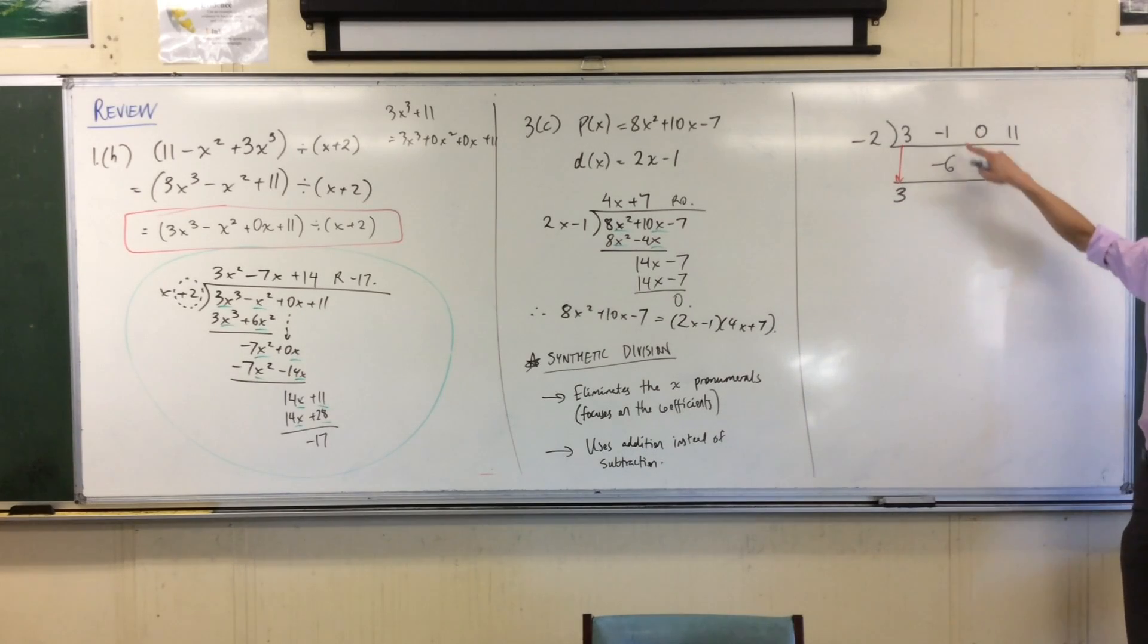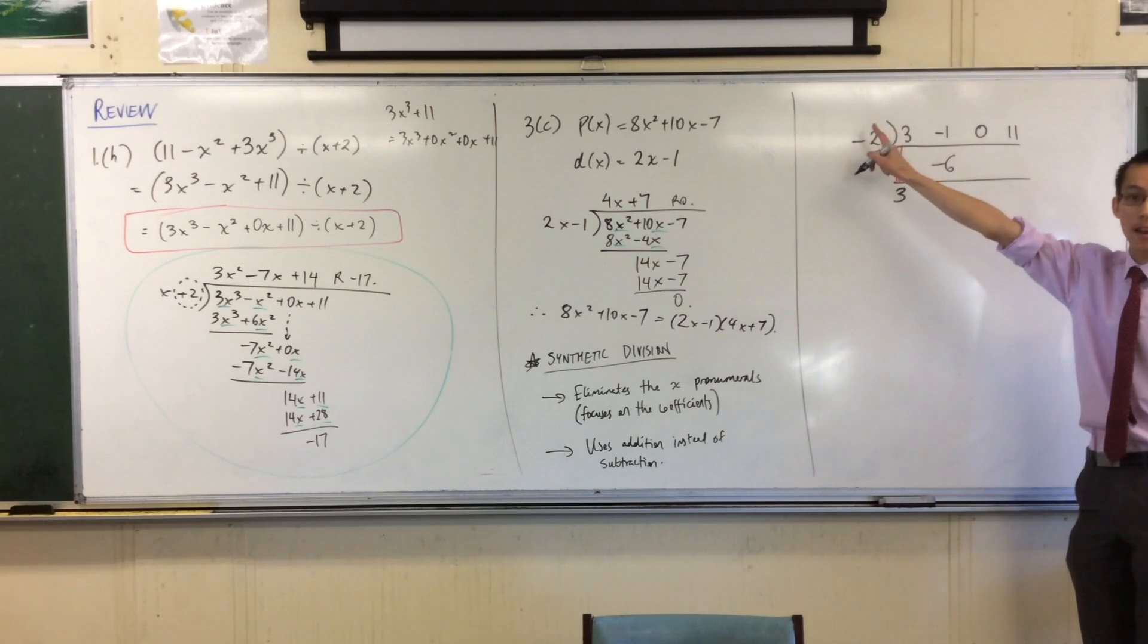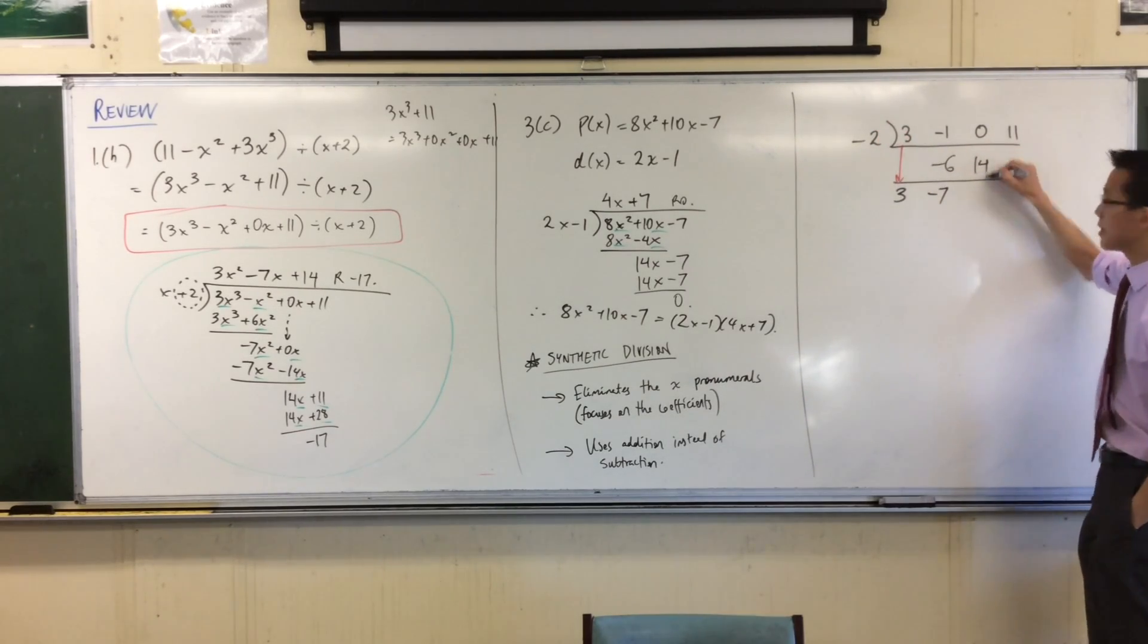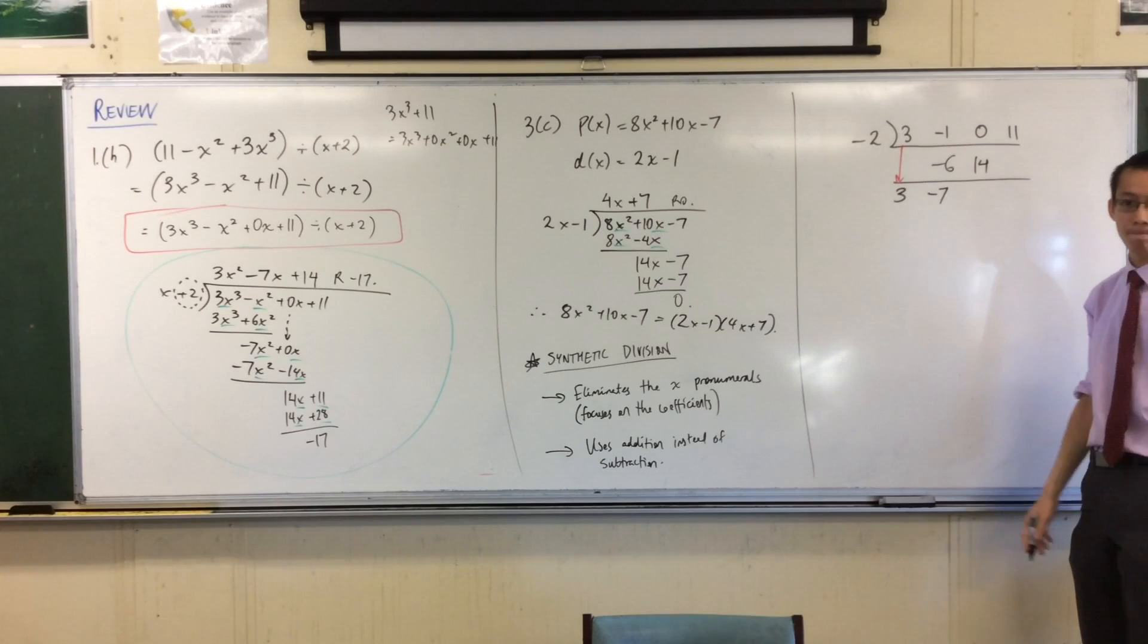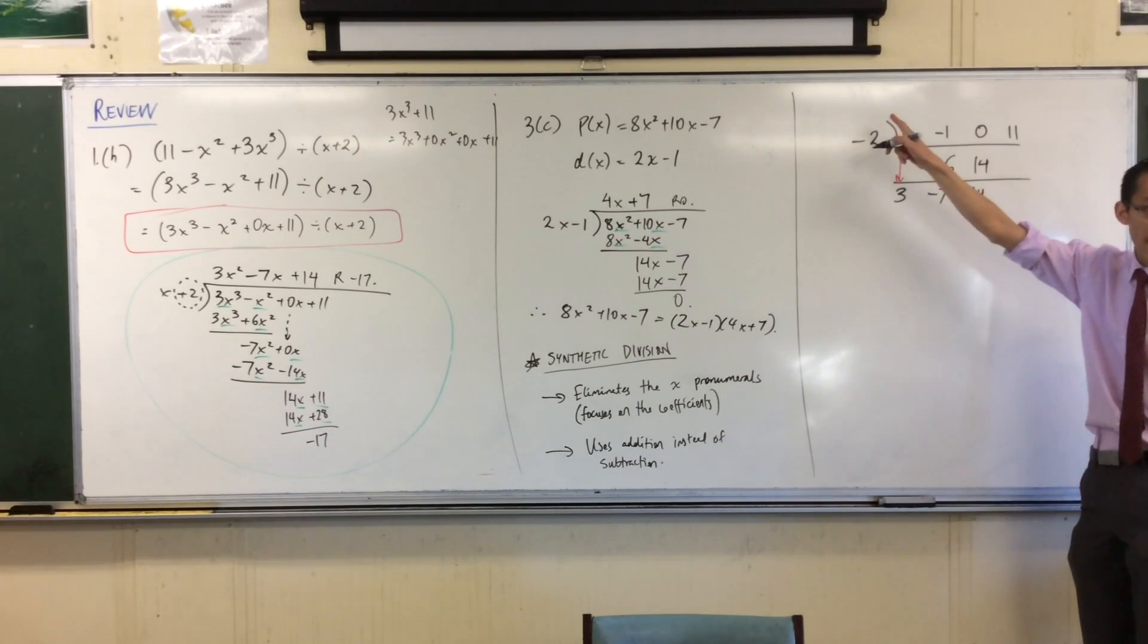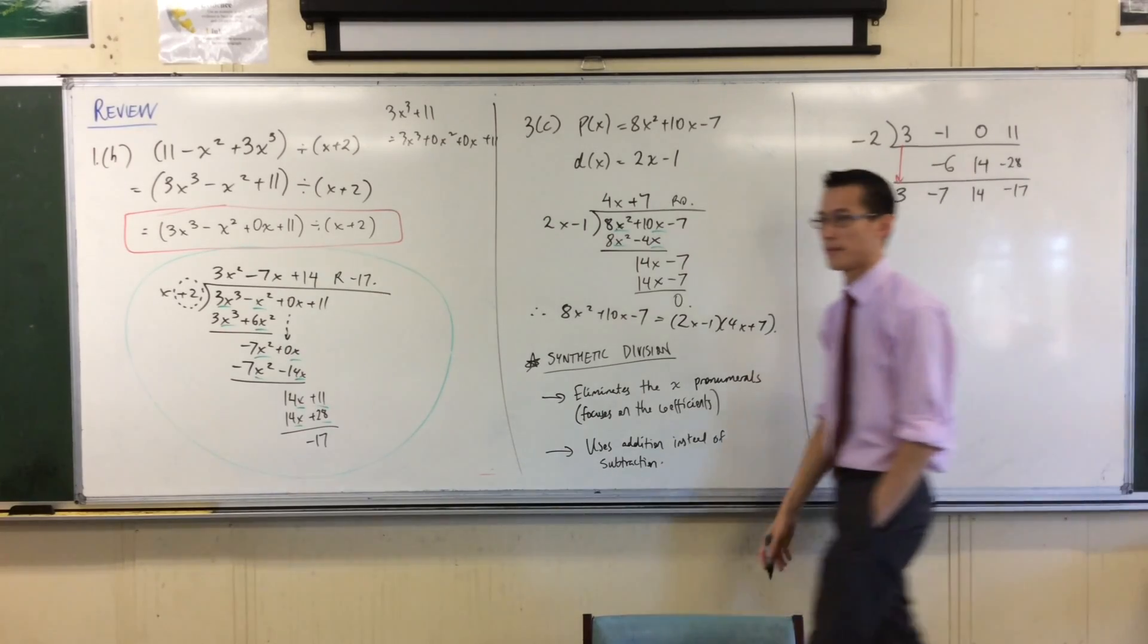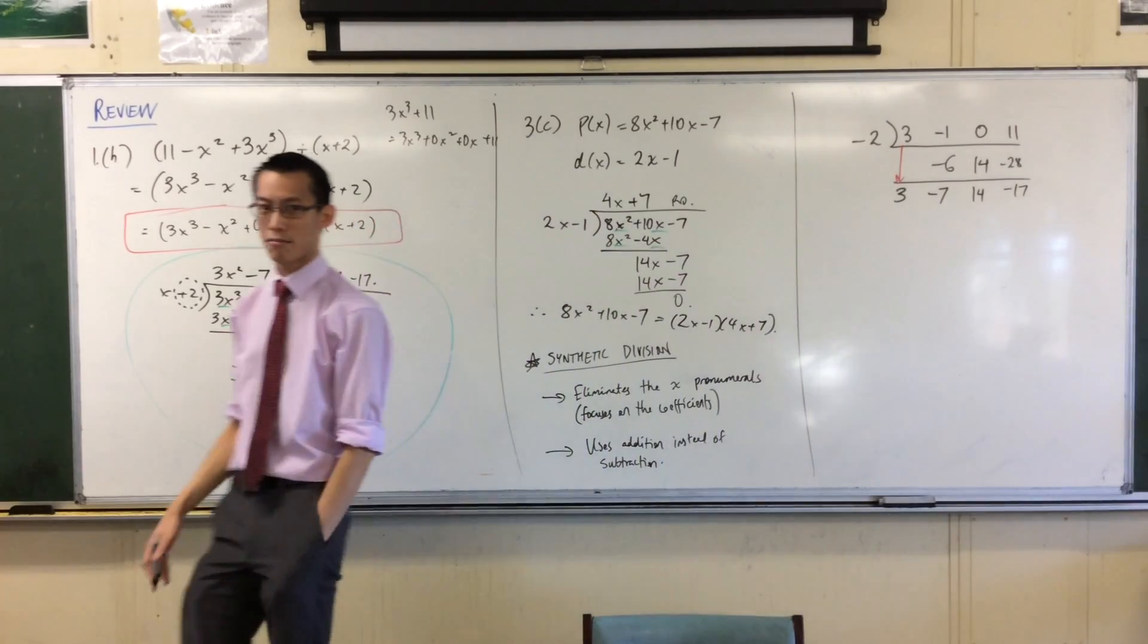And then I'm going to say, well, I've multiplied, now I'm going to add minus 1 plus minus 6, minus 7. And then I do the process again, I multiply, minus 7 times minus 2 is 14, and then I add, what's 0 plus 14? It's 14. And then I multiply and add one more time, so I multiply, which gives me minus 28, and then I add, which gives me minus 17. I'm finished, that was it, that was the whole synthetic division.